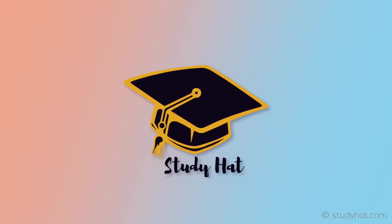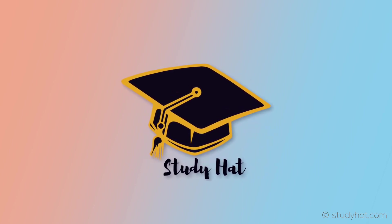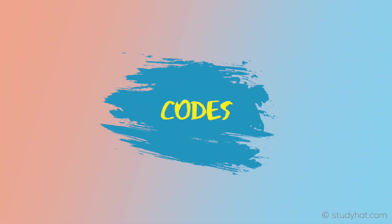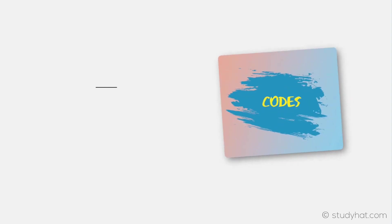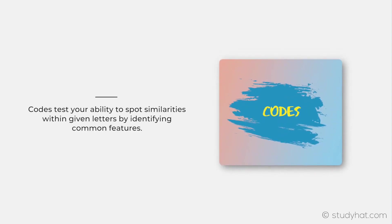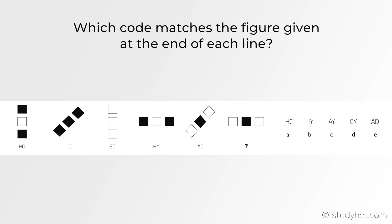Welcome back to Study Hat. In today's lesson we'll be looking at codes. Codes test your ability to spot similarities within given letters by identifying common features and how well you can apply different rules. A typical coded shapes question looks like this — which code matches the figure given at the end of each line? Let's take a look at the approach and then we can start to tackle some of these together.